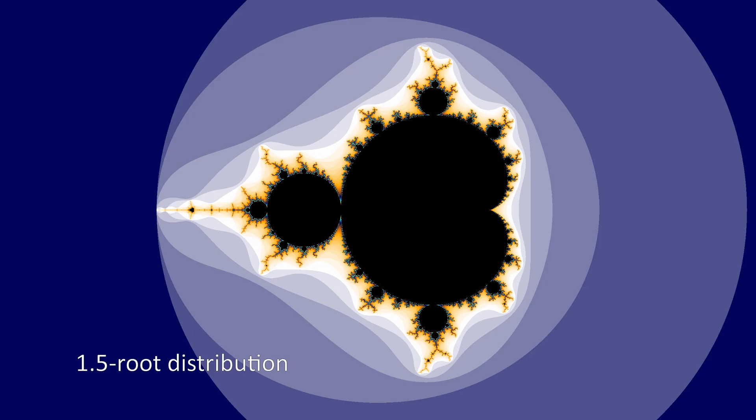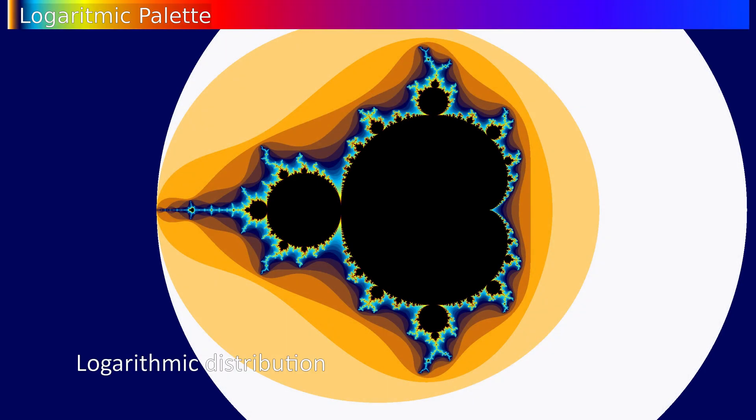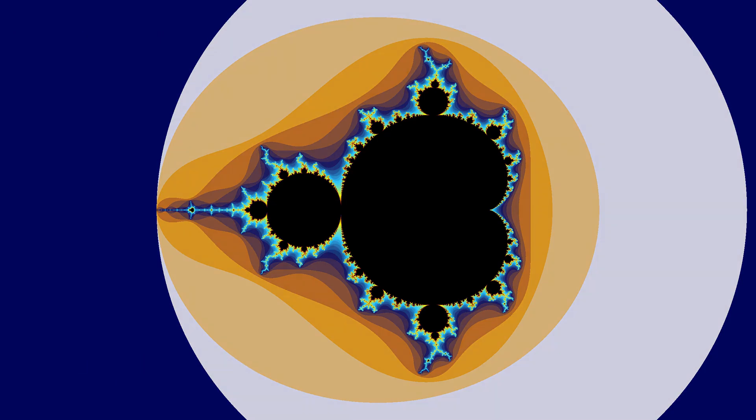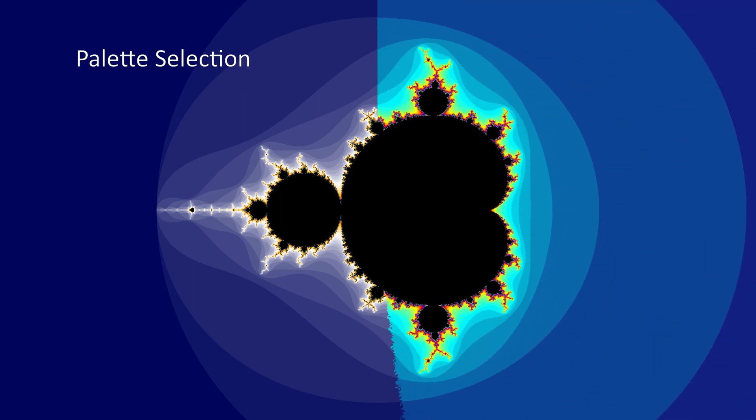That is why usually other non-linear methods like roots or logarithms are used. Let's have a look at what the same methods look like when used with a different palette. For that, we can go back to linear color scheme and change the palette. Looks completely different, doesn't it?